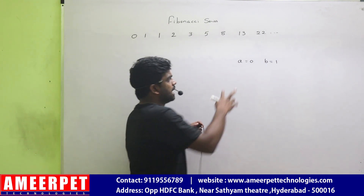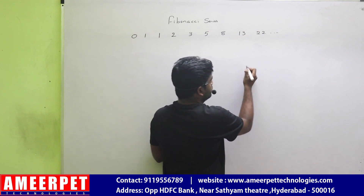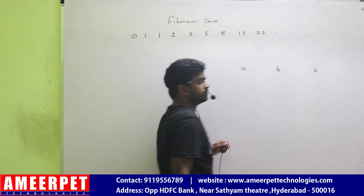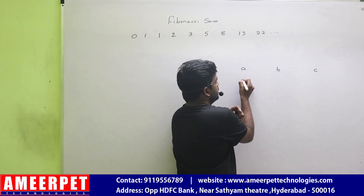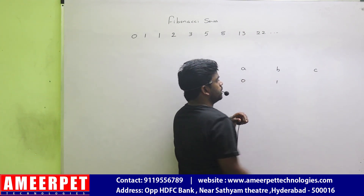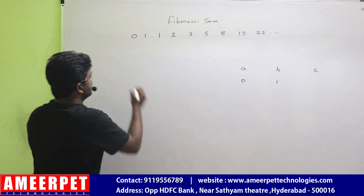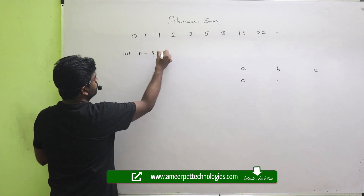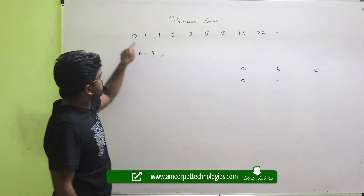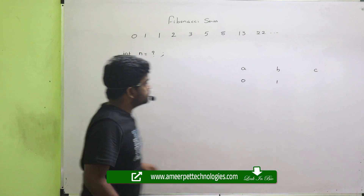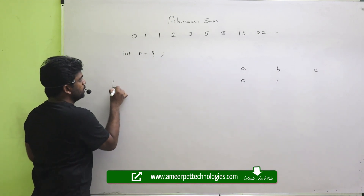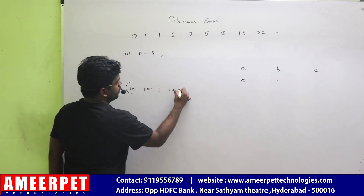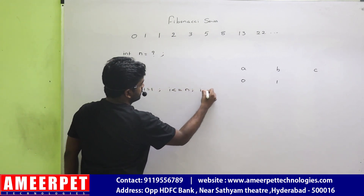Then what I am doing? Adding these two. Simply I am taking a, b, c. First I am taking 0 and 1 into a and b. I am taking, suppose, int n — how many times you want to repeat, nothing but how many numbers you want to display. Those many times you have to repeat the loop: i equals to 1, i less than or equals to n, i plus plus.